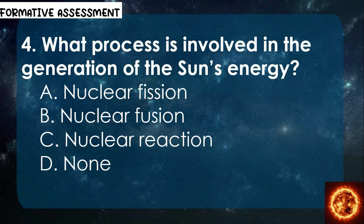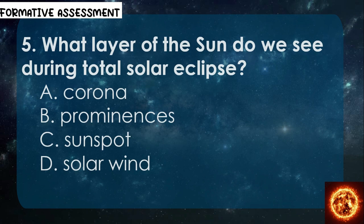Number 4: What process is involved in the generation of the sun's energy? A. Nuclear fission, B. Nuclear fusion, C. Nuclear reaction. Number 5: What layer of the sun do we see during a total solar eclipse? A. Corona, B. Prominences, C. Sunspot, D. Solar wind.